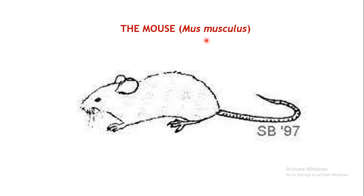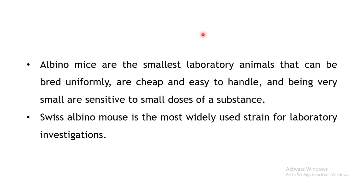The next animal is the mouse; the species name is Mus musculus. Albino mice are commonly used and are the smallest laboratory animals — they are easy to handle, cheap, and require only a small amount of drug to produce an effect. The Swiss albino mouse is the most commonly utilized strain.